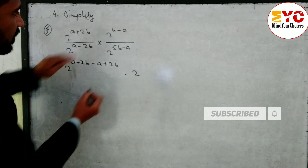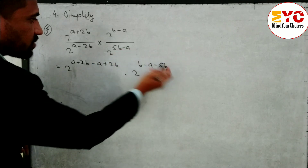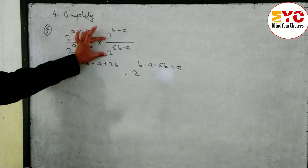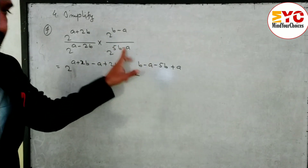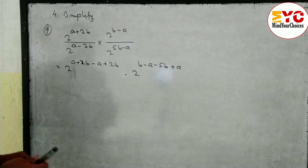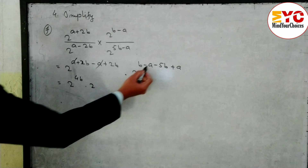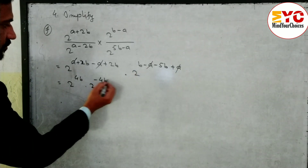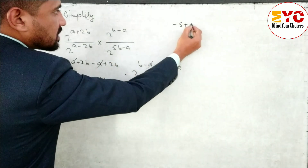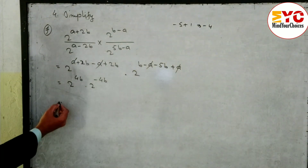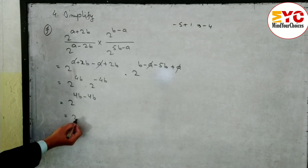Similarly: 2 power (b minus a), then minus 5b — since plus 5b becomes minus 5b — and plus a — since minus a becomes plus a. After simplification, a and a cancel: 2 power 4b. For the other part, a and a cancel; b minus 5b gives minus 4b. So 2 power (4b) into 2 power (minus 4b). Base same, in multiply add the power: 2 power (4b minus 4b) — both cancel — so 2 power 0 equals 1.